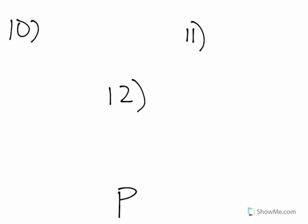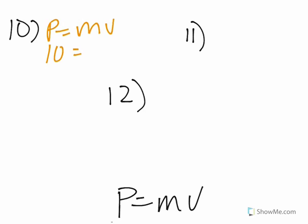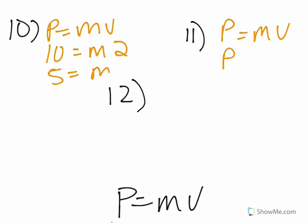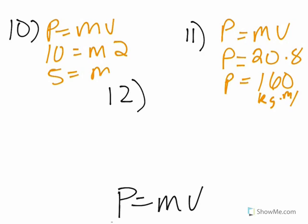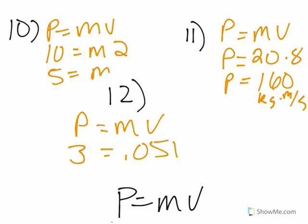For problems 10, 11, and 12, you're using the formula P equals MV — momentum equals mass times velocity. For number 10, momentum is 10, velocity is 2, so mass equals 5. For number 11, you're looking for momentum: mass 20 times velocity 8 gives momentum equals 160 kilogram meters per second. For number 12, momentum is 3, mass is 0.05, and dividing gives velocity equals 60 meters per second.